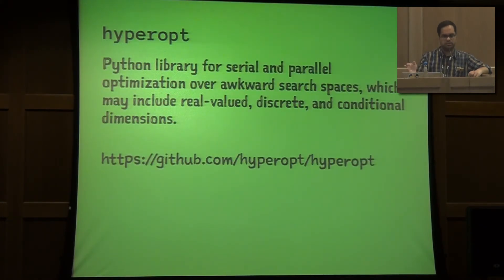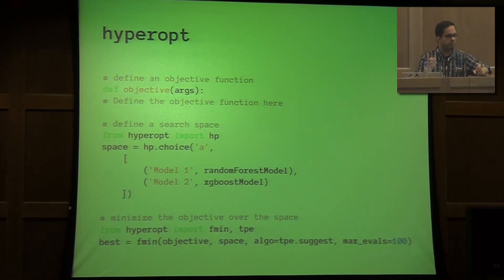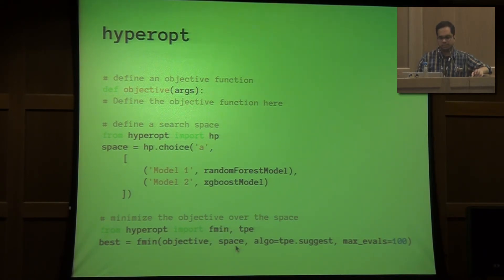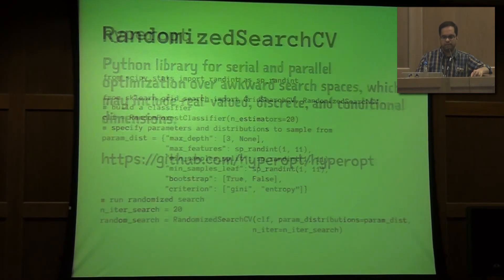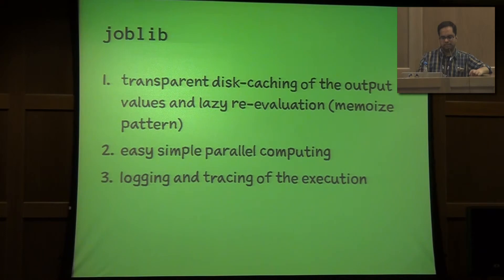For the second stage, hyperopt is the routine for doing parallel optimization over search spaces. It has three things: you define an objective to minimize (typically your error metric like AUC or least square error), you have different models, and you call the function that minimizes that objective over the search space you've provided. To run models in parallel, scikit-learn has joblib, which serializes output values so the model is saved to disk and you don't need to rerun it every time. It also helps you run multiple models with multiple threads.